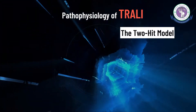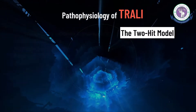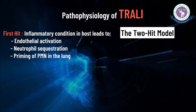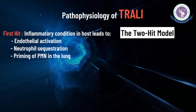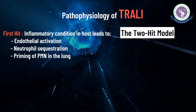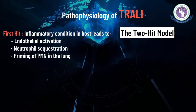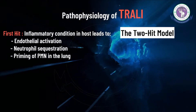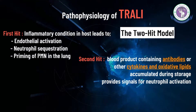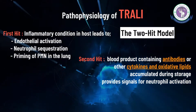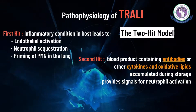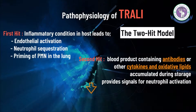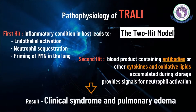A two-hit model is proposed to explain the pathophysiology of TRALI. The first hit involves patients in inflammatory conditions, which leads to activation of pulmonary vascular endothelial cells and priming of neutrophils, resulting in sequestration of neutrophils in the pulmonary microvasculature. These inflammatory conditions include sepsis, surgeries, and massive transfusion. The second hit is the infusion of antibodies and biological response modifiers such as inflammatory cytokines and oxidative lipids, which activate the primed neutrophils resulting in pulmonary endothelial damage, capillary leakage, and pulmonary edema.